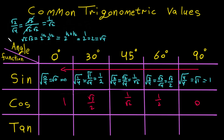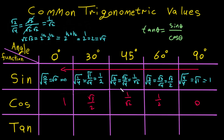For the tangent function, we know that tan of any angle theta equals sine theta over cosine theta. So we put sine over cosine for each angle. For 0 degrees, we have 0 over 1, which equals 0.